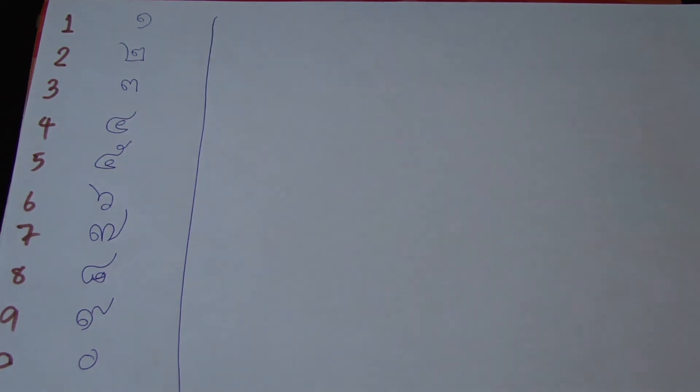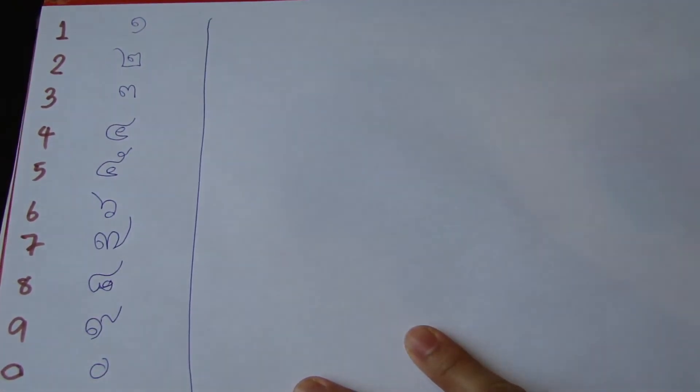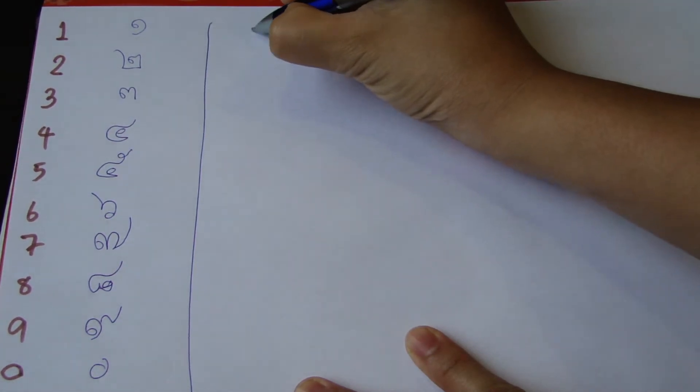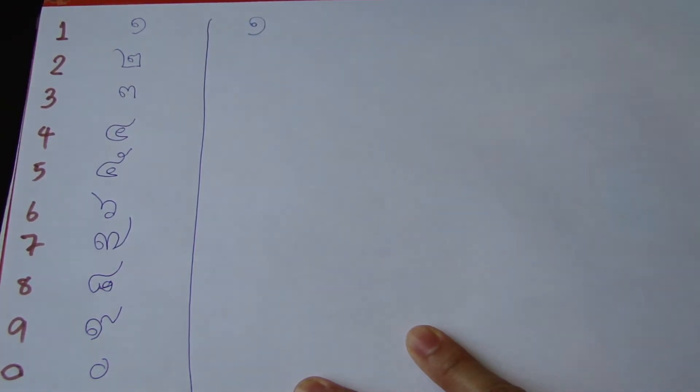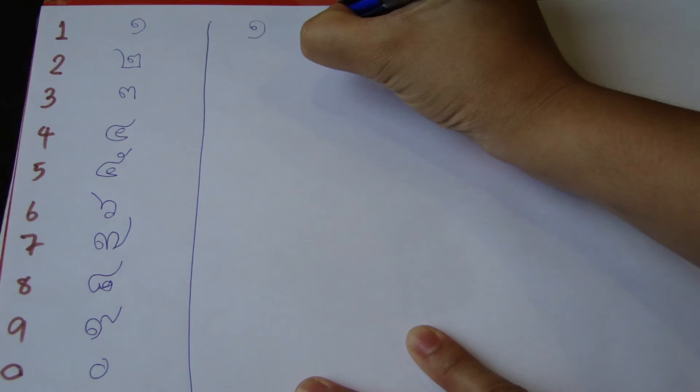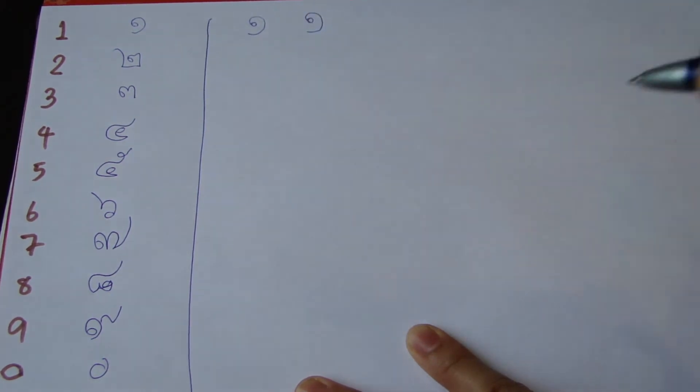How to write down number 1. In Thai letter or Thai number, you always start with this tiny circle. You start with a tiny circle there, and then you do like this. It's done, number 1. Do it again. Number 1.